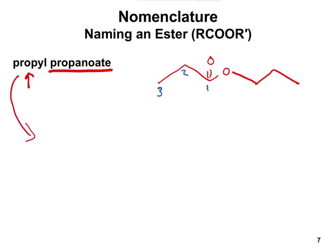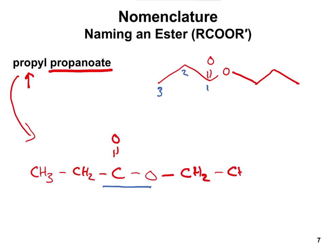Drawing propylpropanoate as a complete structure: starting with the propanoate parent chain — C double bonded to O, bonded to CH₂, bonded to CH₃. That is the ester portion. Then the propyl part attached directly to the oxygen is a three-carbon substituent: CH₂–CH₂–CH₃. Remember, oxygens always have two bonds and two lone pairs, and carbons have four bonds.